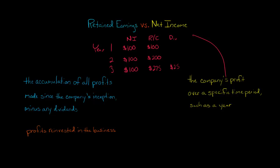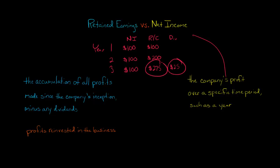Notice that net income in each case is just for that specific year — year one, year two, or year three. It's just for a set period of time. But look at the retained earnings balance: it's a running tally of all the profits ever earned. The reason the ending balance is $275 and not $300 is because we subtract the $25 in dividends — that $25 was distributed back to shareholders and has not been reinvested in the business.